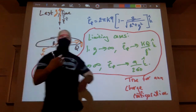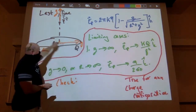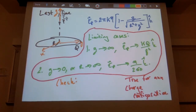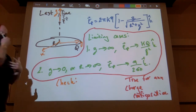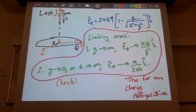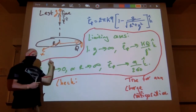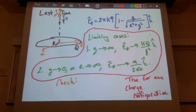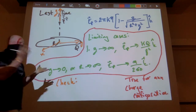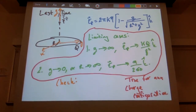Whenever I get an electric field and want to make sure it's correct, I should check my limiting cases. If I go infinitely far away from the object, it must look like a point charge — otherwise I know I'm wrong. If I get infinitely close, meaning z goes to zero or r goes to infinity, it must look like a sheet of charge with field η/(2ε₀). These are the two ways to verify the result.